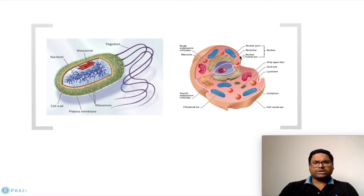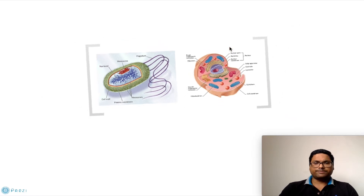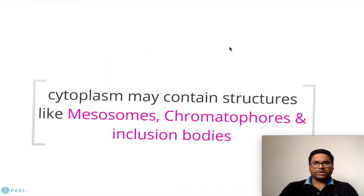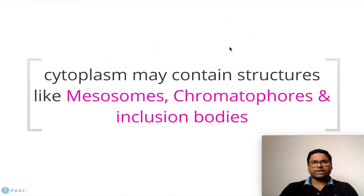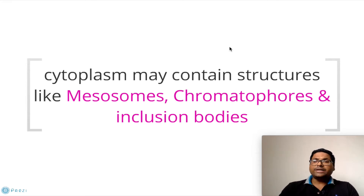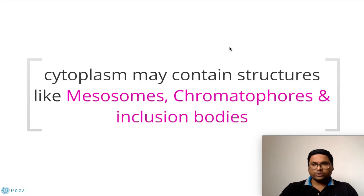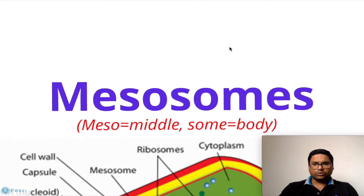These membrane-bound organelles are present in eukaryotic cells but are absent in prokaryotic cells. The cytoplasm of prokaryotic cells may, however, contain different structures like mesosomes, chromatophores, and inclusion bodies. Let us look at each of these.